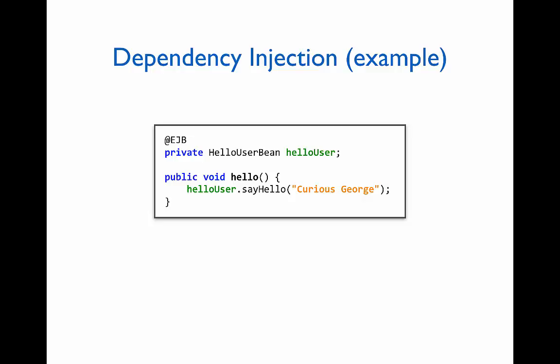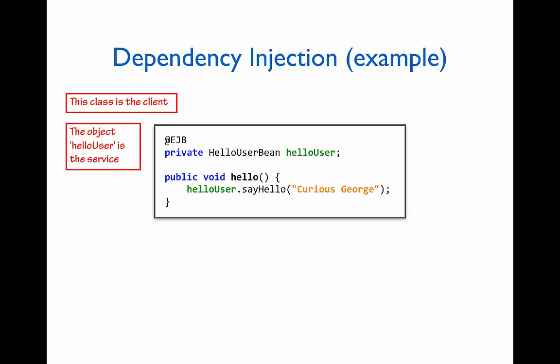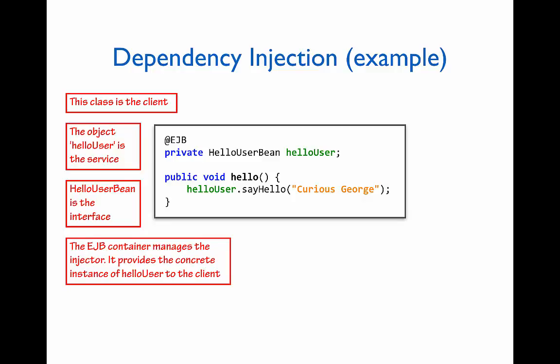Let's look at a simple example involving dependency injection. Here's some code with a private variable named HelloUser of type HelloUserBean. This class represents the client, and the HelloUser variable will hold the service object. The type HelloUserBean is the interface — that is the kind of object the client needs — because it will use the service object to invoke the method called SayHello. In this case, the injector is the EJB container. We know this because of the @EJB annotation on the instance variable. The EJB container will provide an instance of this client class with an appropriate HelloUserBean object that implements the SayHello method.